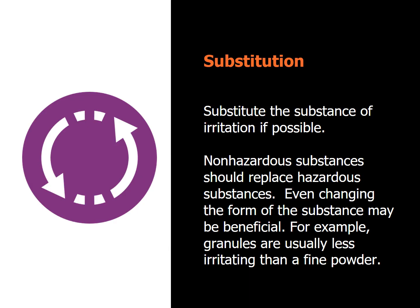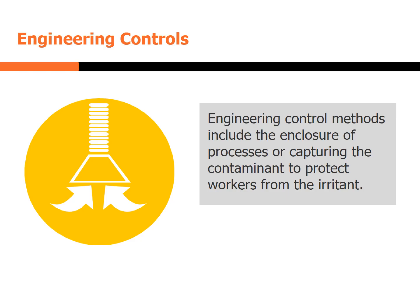Substitute the substance of irritation if possible — non-hazardous substances should replace hazardous substances. Even changing the form of the substance may be beneficial. For example, granules are usually less irritating than a fine powder. Engineering control methods include the enclosure of processes or capturing the contaminant to protect workers from the irritant.